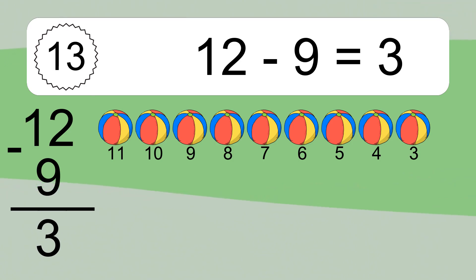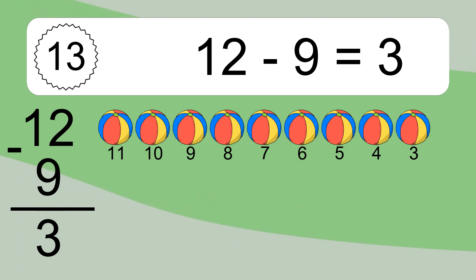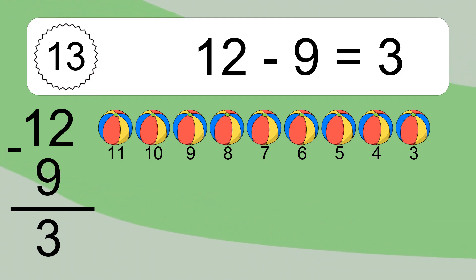12 minus 3 equals what? Let's count it: 12, 10, 9, 8, 7, 6, 5, 4, 3.